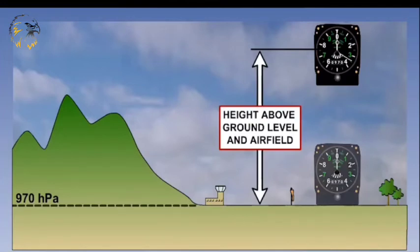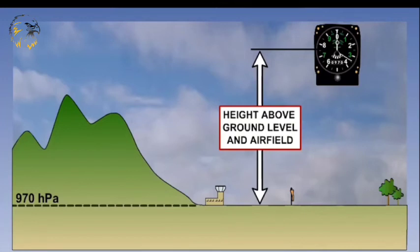Getting the altimeter to read height above the airfield can be very useful to pilots if operations require accurate height above the airfield. If we were to get the actual pressure of the airfield and correct it to the airfield reference point or threshold, then we have a pressure value known as QFE.